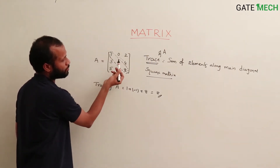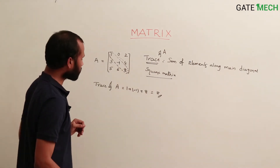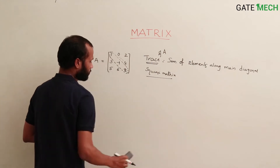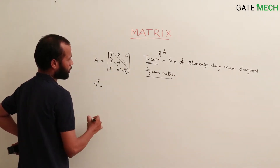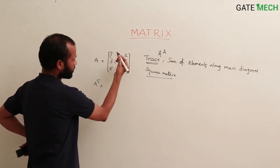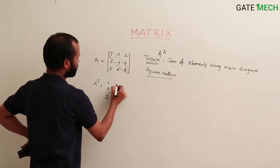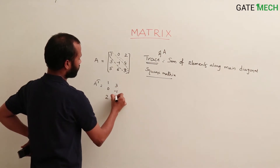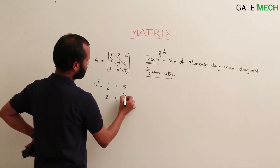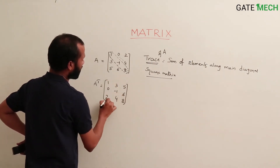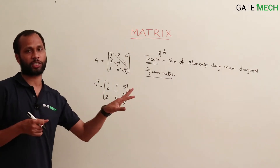Trace is defined as the sum of the elements along its main diagonal. This is the main diagonal. Sum of elements along the main diagonal is called the trace. For example, for matrix A, what would A transpose be? We write rows as columns: 1, 0, 2, 3, -1, 4, 5, 6, 8.